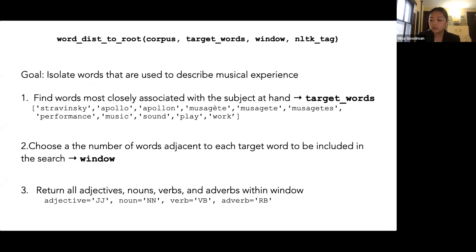To supplement the VADER sentiment analysis tool, we developed a targeted way of assessing sentiment with our word distribution function. The goal of the function is to return only the words used as descriptions of the performance or piece in question. The intuition is that descriptors are more likely to be found adjacent to words that represent the subject, which I call target words. I choose a window — an integer specifying how many words adjacent to the target word on each side to consider — usually five. The function returns only adjectives, nouns, verbs, and adverbs from within the window. Words with the same root as the target words are also considered.